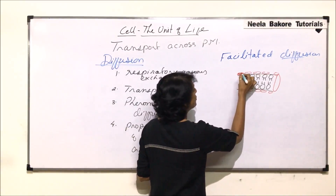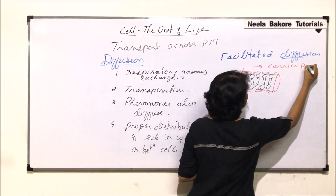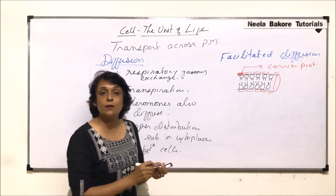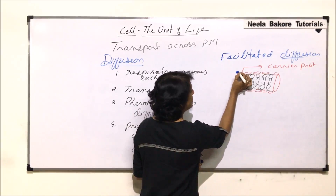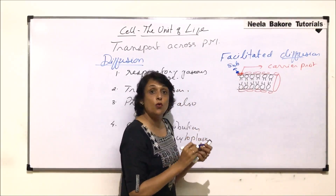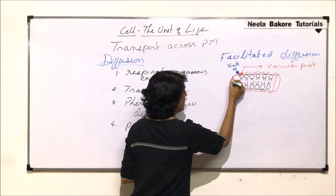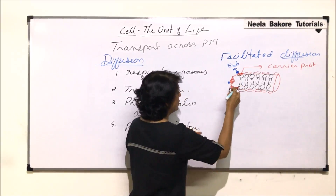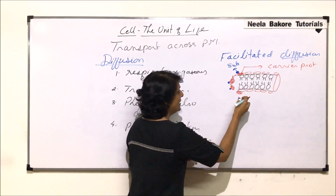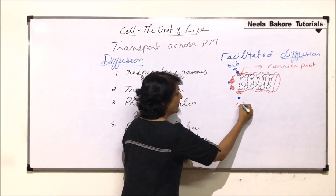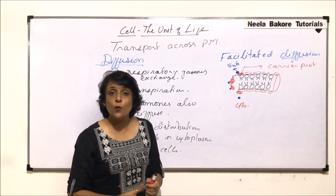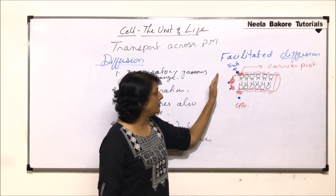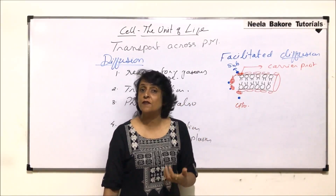Certain proteins act as carrier proteins. A carrier protein binds to a substance that needs to be transported across the plasma membrane. The protein moves from the outer side, carrying the substance, and travels to the inner side of the membrane, where it releases the substance into the cytoplasm. This means the substance was transported across the plasma membrane with the help of a carrier protein — an external, additional facility provided for transport.